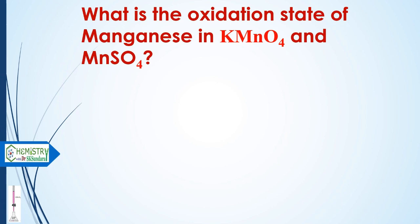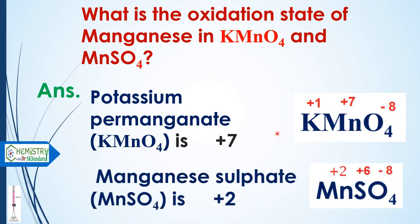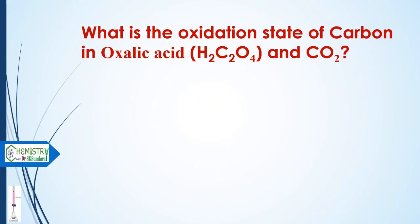The next question is: what is the oxidation state of manganese in KMnO4 and MnSO4? In KMnO4, each oxygen is −2, so four oxygens give −8, and potassium is +1, so manganese is +7. In manganese sulfate, oxygen is −2 (four oxygens = −8) and sulfur is +6, so manganese is +2.